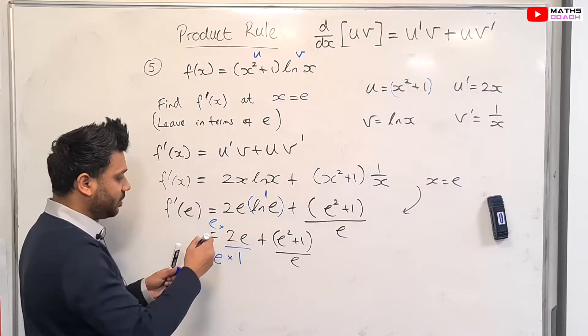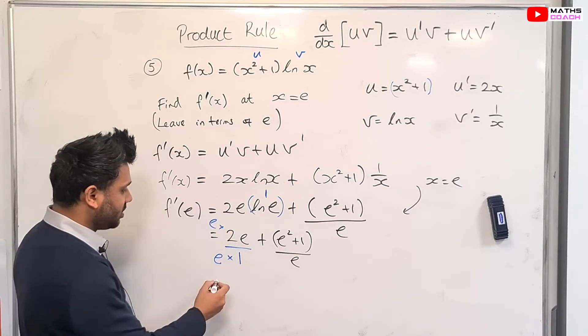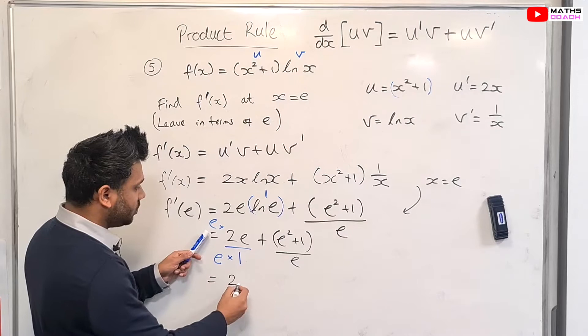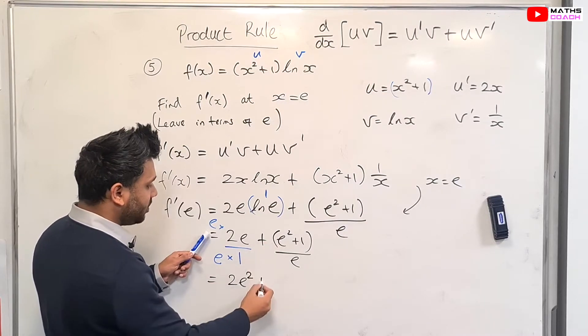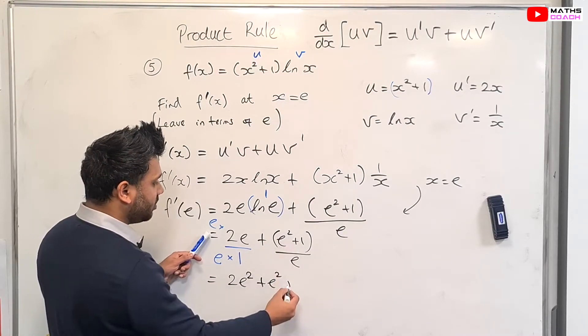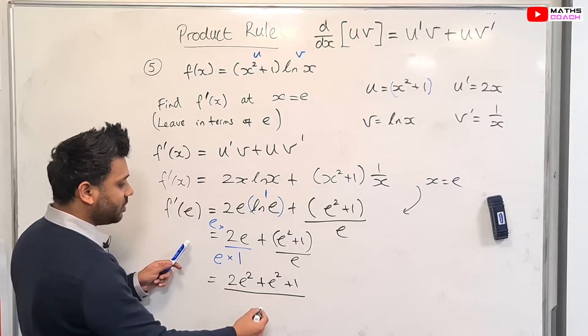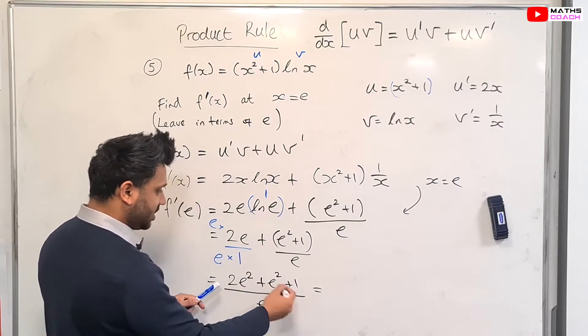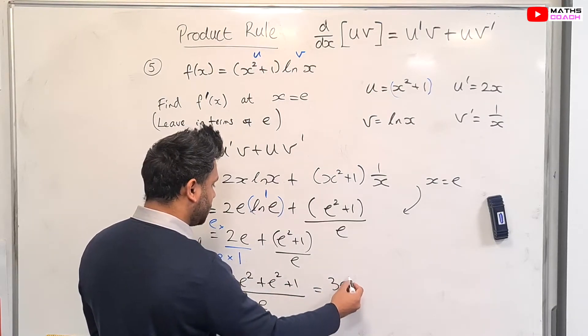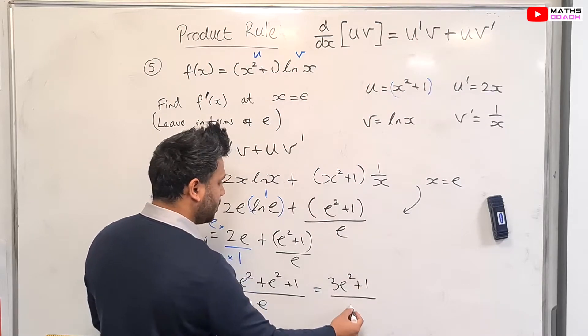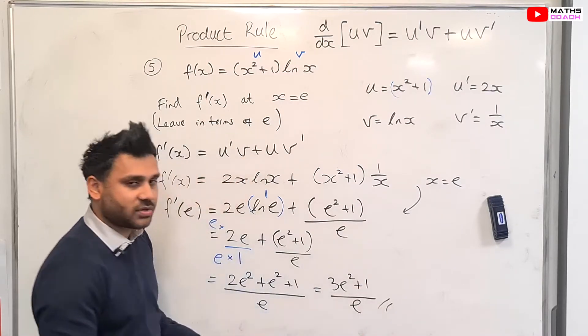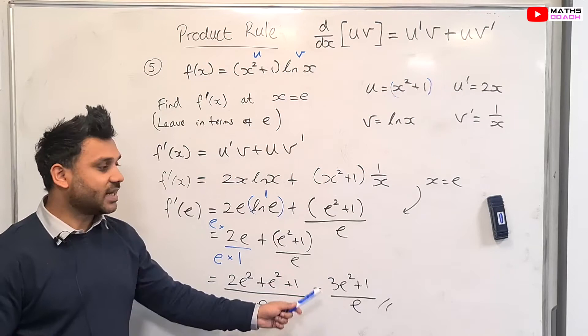the numerator has to get multiplied by e, in which case we now have 2e squared plus e squared plus 1, all over the same denominator e, that just simplifies to 3e squared plus 1, all over e.